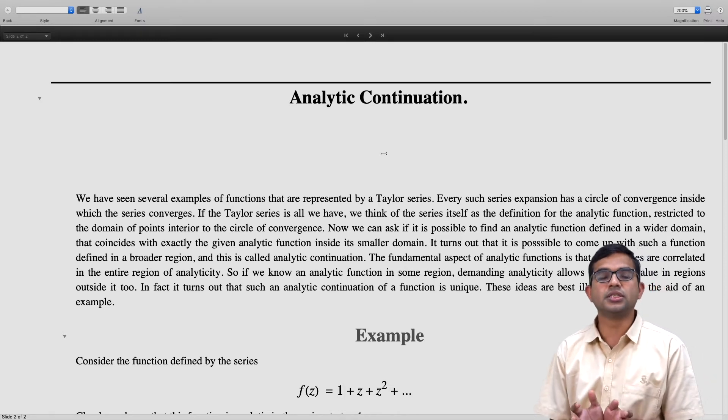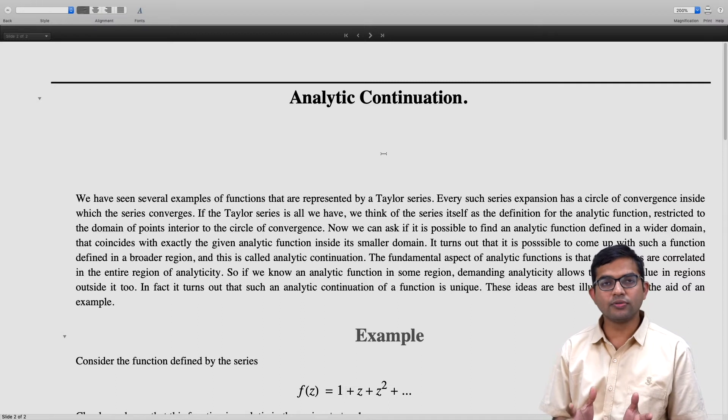Suppose you have a function which is defined in terms of a series. Taylor series, as we have seen, has a region of convergence. There is a circle of convergence inside which this Taylor series is convergent, and so the function is well defined inside this circle of convergence.